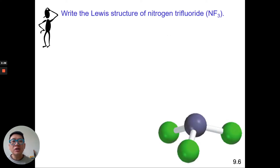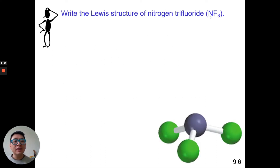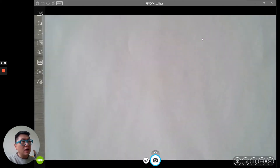Let's look at drawing the Lewis dot structure of nitrogen trifluoride (NF3). First, we determine which element goes in the center — the least electronegative element. When written as NF3, the first element that's not hydrogen goes in the center. For H2O, it would be oxygen. In this case, nitrogen goes in the center, surrounded by three fluorines, because nitrogen is less electronegative than fluorine.